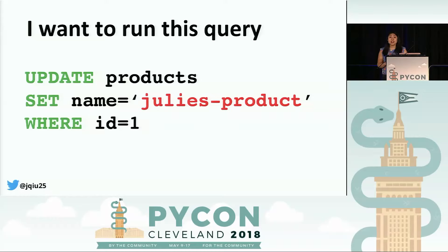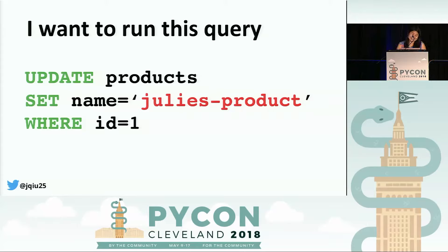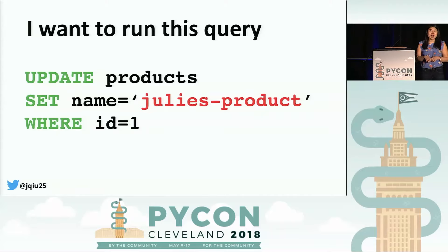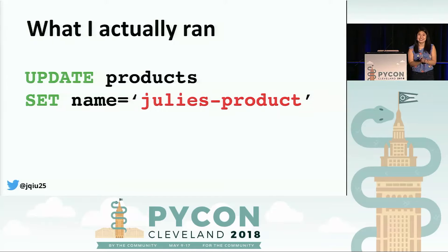So I write this query and when I'm done, I look around and realize all the engineers have already left. I think I could Slack someone to double check me, but it's Friday night and I really don't want to bother anyone. I've run queries similar to this a million times before — what's the worst that could happen? So I go ahead, run the query, send a message to the marketing team, and go get some water. Then I come back to my laptop and realize this is what I actually ran — accidentally updating every single product in our database to be named Julie's product.